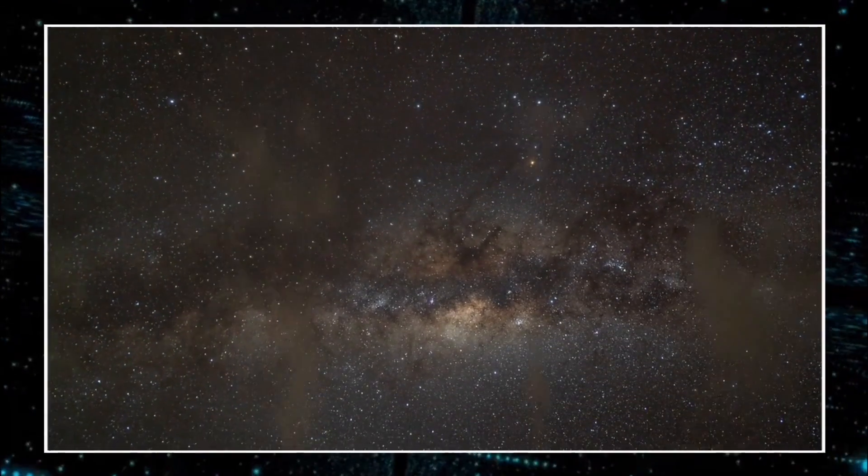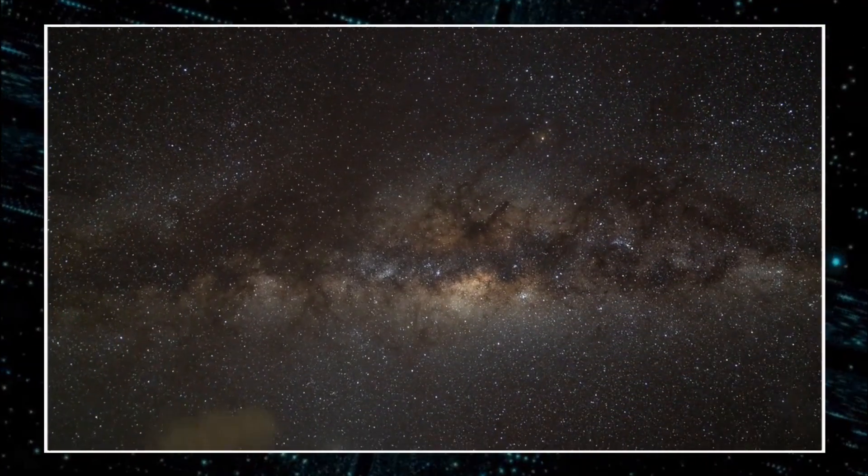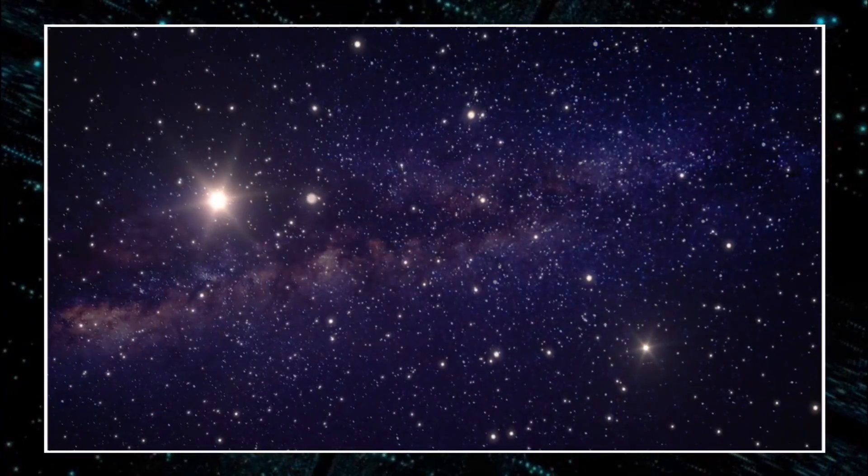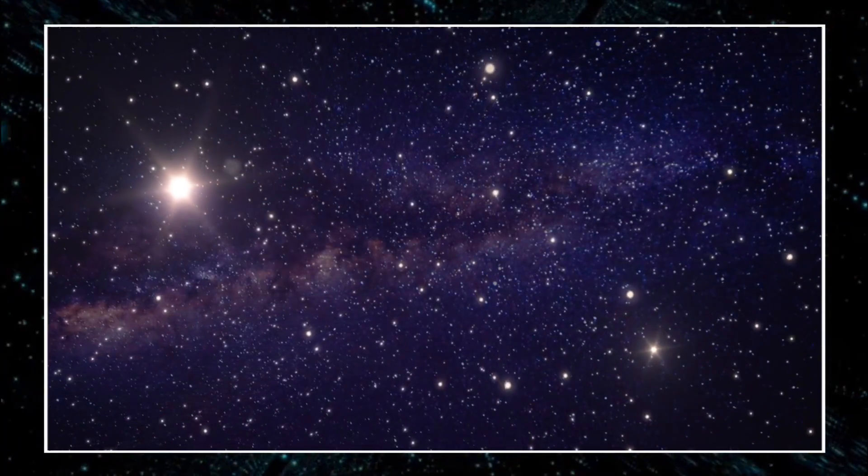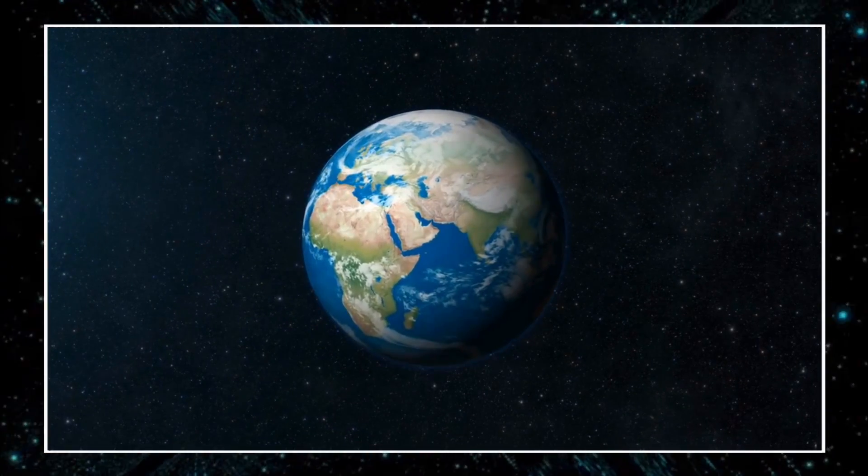There are more stars in the universe than grains of sand on all the beaches on Earth. That's at least a billion trillion. But how many of those stars have planets around them? And how many of those planets could support life?